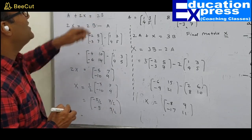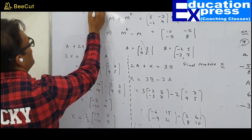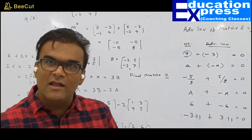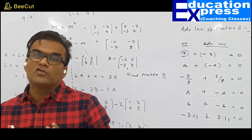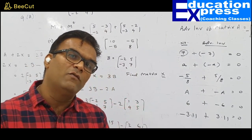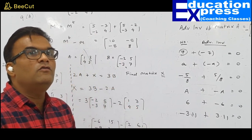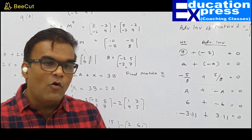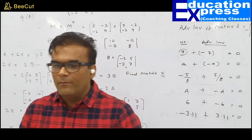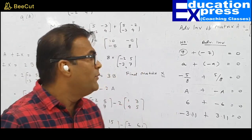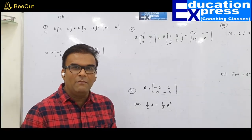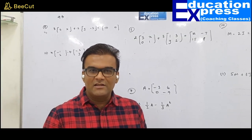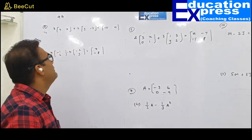With this, exercise 9A comes to an end. Try all questions of exercise 9A — you will get almost all answers correct at the first attempt, provided you go through the explanation of the first 15 to 20 minutes again and again until you get the hang of it. Now moving on to exercise 9B.